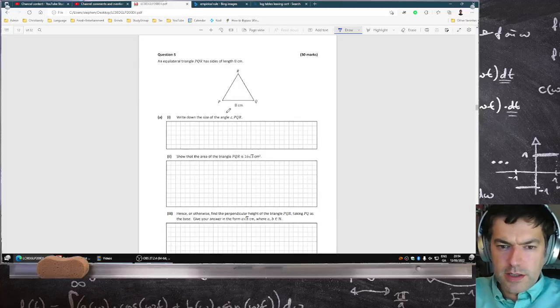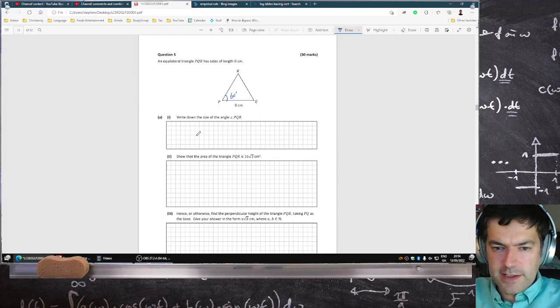Okay, equilateral triangle. So in an equilateral triangle, they're all 60 degrees.